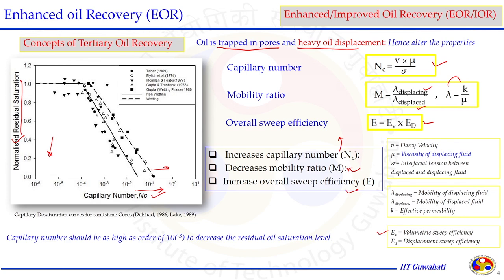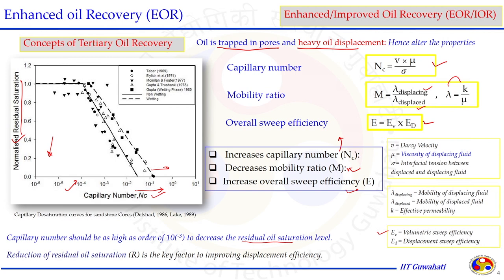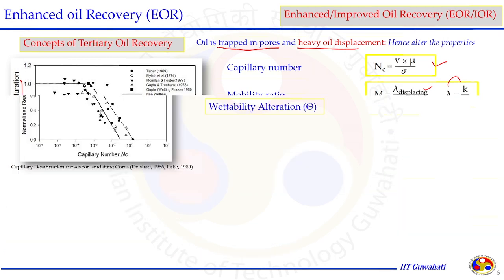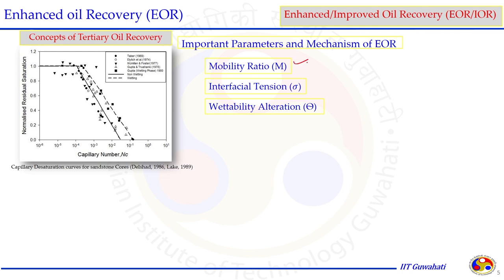Reduction of residual oil saturation is the key factor for improving displacement efficiency. If residual oil saturation is low, displacement efficiency is high. The important parameters and mechanisms of EOR are: mobility ratio, interfacial tension, and wettability alteration. Mobility ratio can be improved by increasing the viscosity of the injected fluid or reducing the viscosity of the oil. Interfacial tension between the two immiscible phases needs to be reduced, and wettability alteration — the affinity of the rock towards a particular fluid — should also be modified in favor of oil recovery.